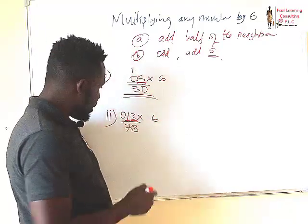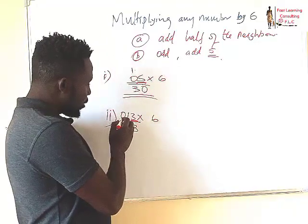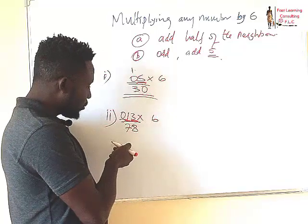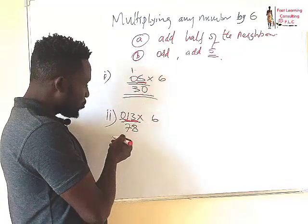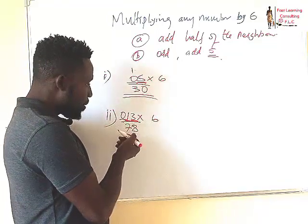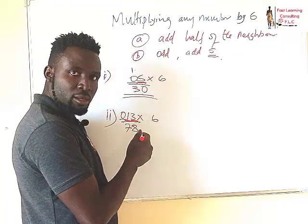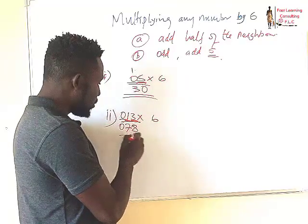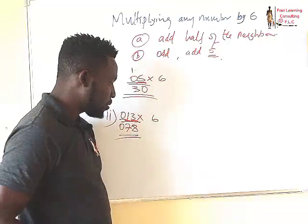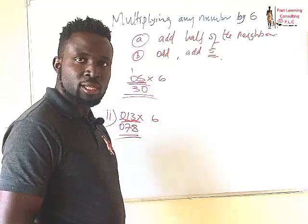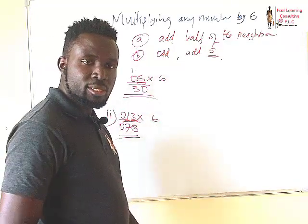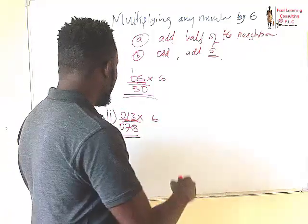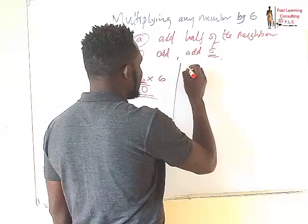When we go to 0, half of the neighbor is 0.5, which we round off to 0. So our answer is 78. Easy, easy peasy. Now let's go to another example — an even bigger number.